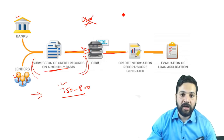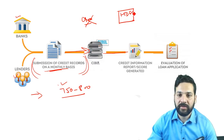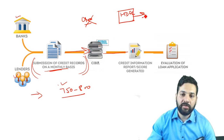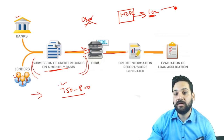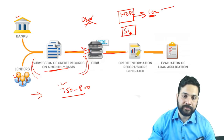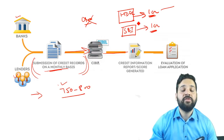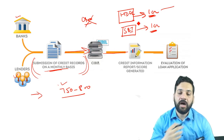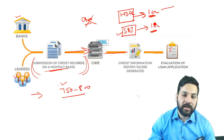Let's say there is a person who took a loan of one crore rupees from HDFC and he defaulted on it — the case is now in a court of law. The same person then went to SBI and asked for a loan of one crore again. If there is no central database, how would it even be possible for SBI to know about this default?